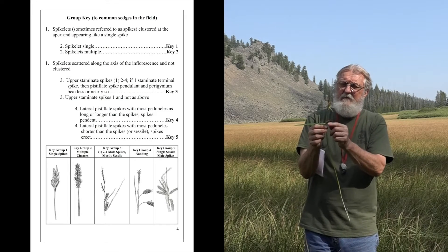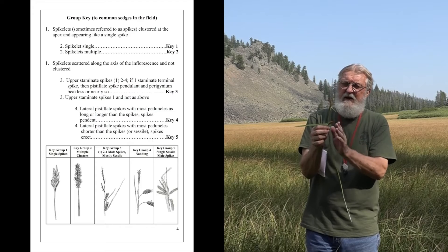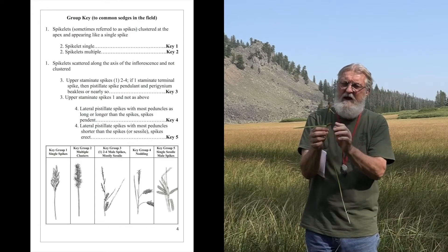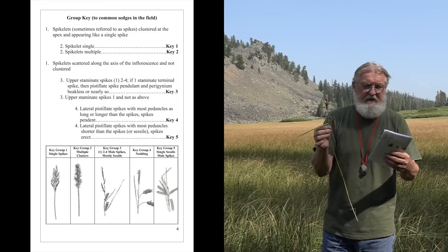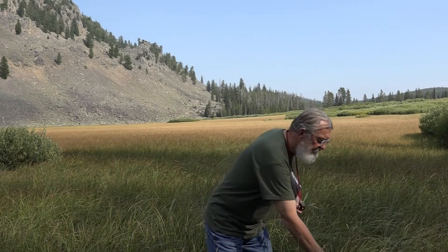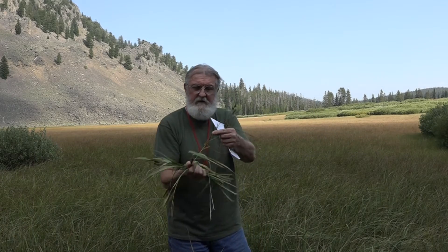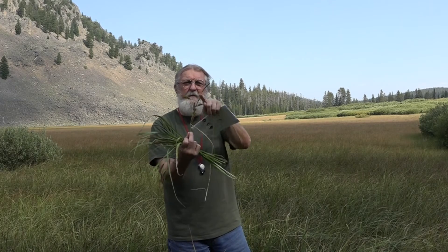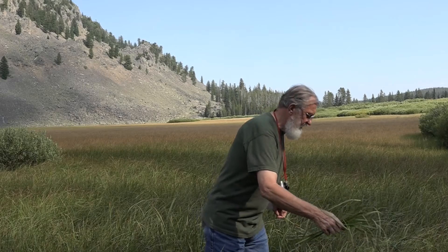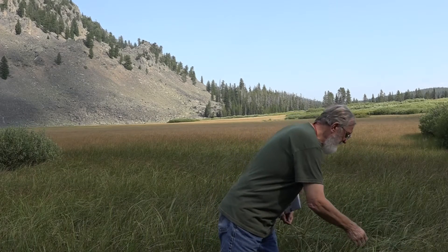Group five has pedicels shorter than the length of the spikelet, and they tend to be more erect and not dangle. So we have five easy groups. In each group — for example, here is intumescens, a very common one — you can see the spikelets with males on top in this same meadow.